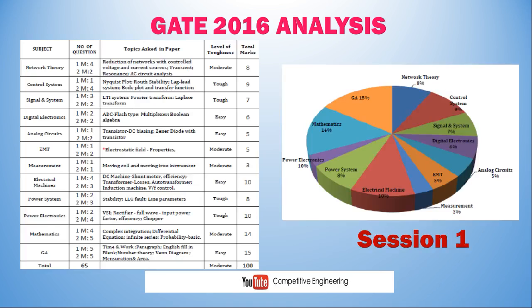Going directly into the Session 1 analysis — on the left side you can find the subject, total number of questions asked (1M means one-mark question, 2M means two-mark question), topics asked in the paper, level of toughness, and total marks. The exam is for 100 marks with 65 total questions. On the right side you can find a pie diagram.